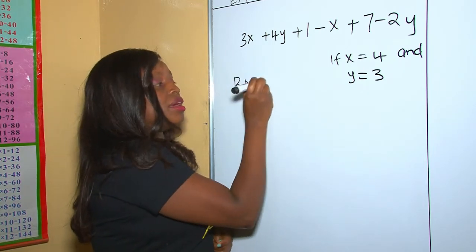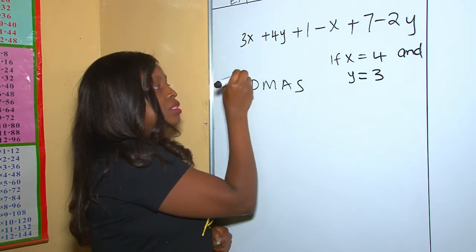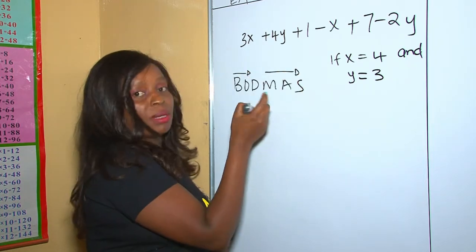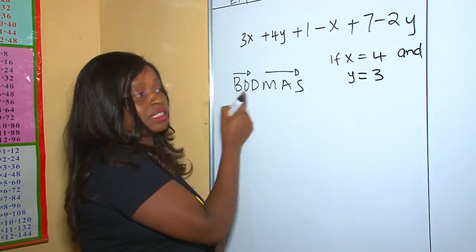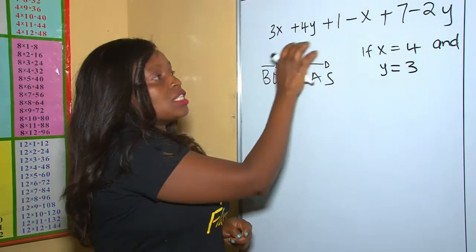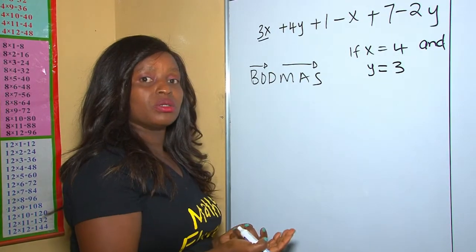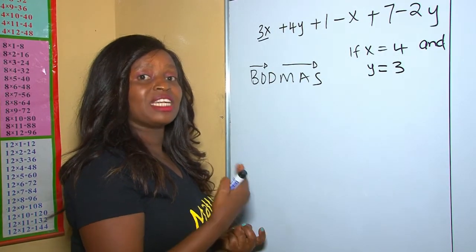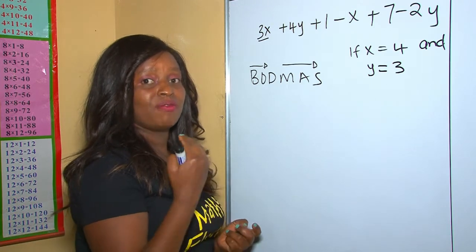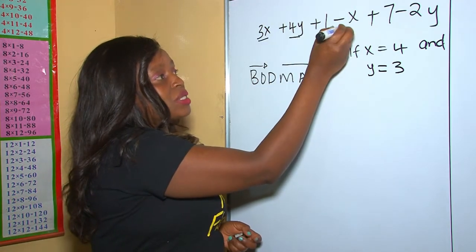Remember, BODMAS begins from left going to right, meaning brackets come first and subtraction comes last. Now in this question, as you can see, it is an algebraic expression since it is made up of terms that have letters and others that don't have letters, so we need to put these like terms together.